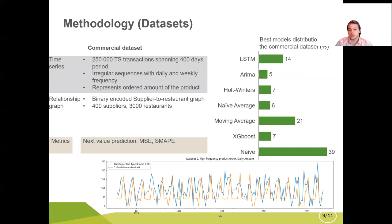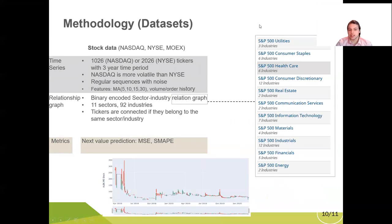So we can't just use only one model. We actually need to test for every product and select the best model each time. The next set of datasets are NASDAQ and NYSE data. We have 1000 and 2000 tickers for associated for a particular stock market, stock dataset. And as a relationship graph we have binary encoded sector industry graph with sectors and industries. Tickers are connected if they belong basically to the same sector or the same industry.